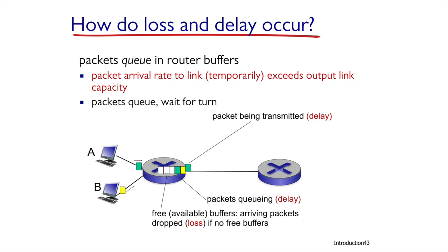Each router has a memory capacity, generally called a buffer, which is managed as a queue. Using the buffer, the router accumulates incoming packets. Routers work in the store-and-forward method, storing packets and forwarding them. Routers have to store packets in the buffer in order to analyze them, sometimes manipulate them, and only then to forward them.